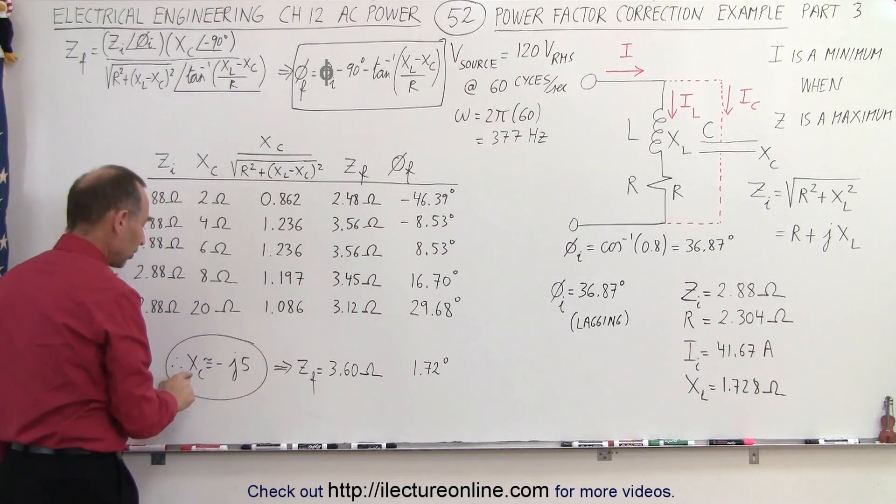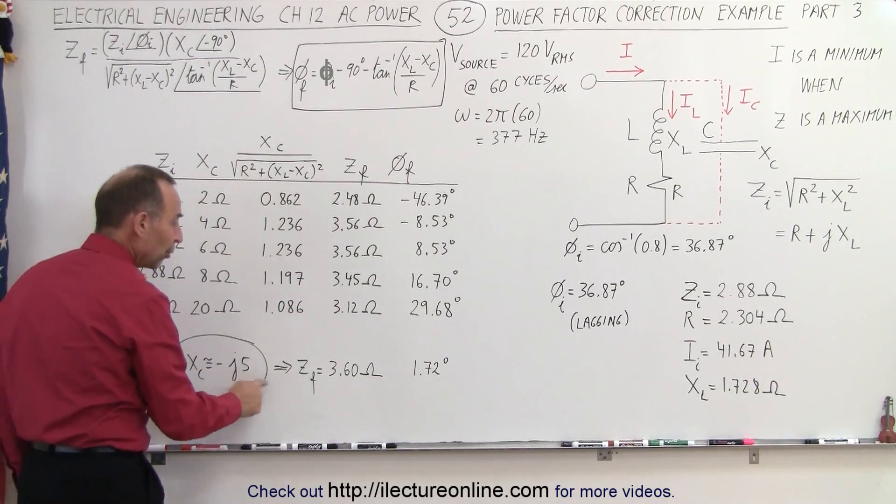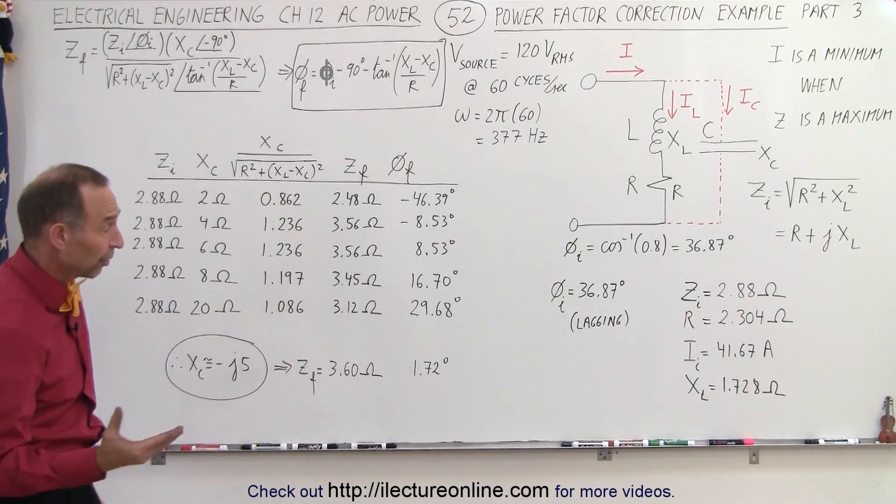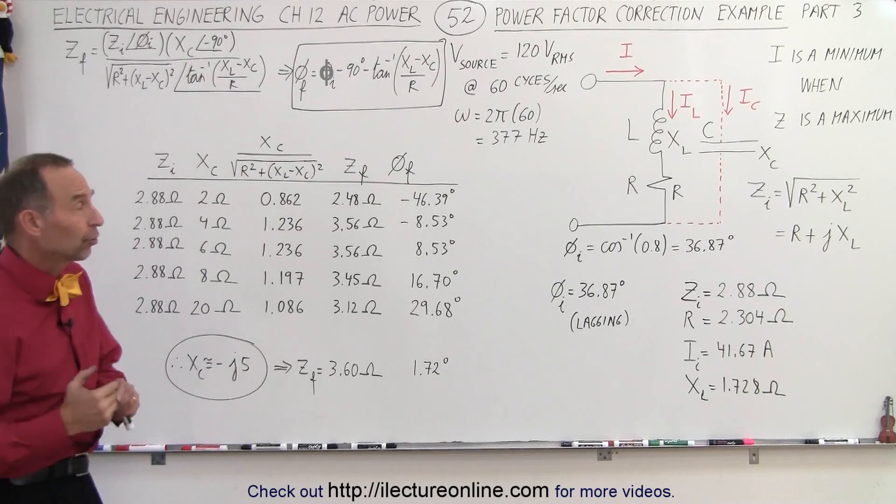Notice that if we use a capacitor reactance of five ohms, we get a phase angle of very close to zero degrees. In other words, a power factor very close to equal to one.